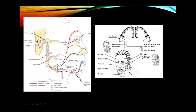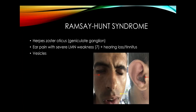Herpes zoster can cause Ramsay-Hunt syndrome — facial weakness plus auditory involvement: hearing loss, tinnitus, and vertigo. It's always important to look in the ear for vesicles in patients with facial weakness, as treating Ramsay-Hunt syndrome is very important.